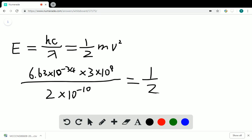That is equal to one-half the mass of a neutron, which is 1.675 times 10 to the negative 27th kilograms times v squared.